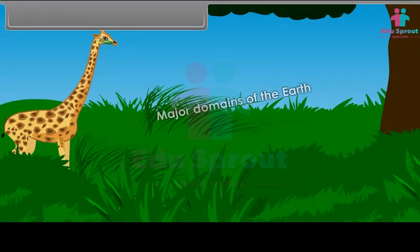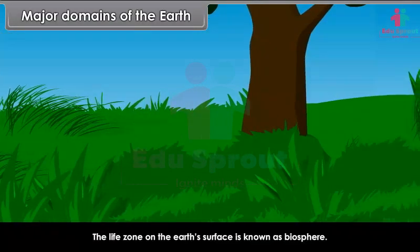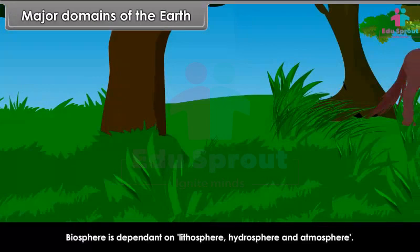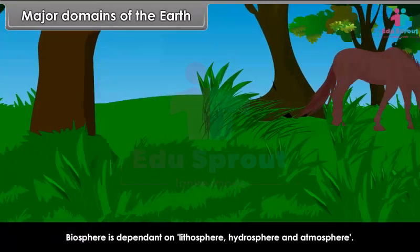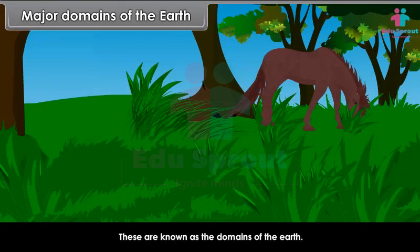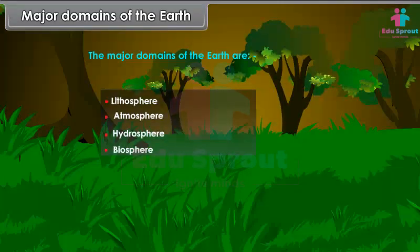The life zone on the Earth's surface is known as the Biosphere. Biosphere is dependent on Lithosphere, Hydrosphere and Atmosphere. These are known as the domains of the Earth. The major domains of the Earth are Lithosphere, Atmosphere, Hydrosphere, and Biosphere.